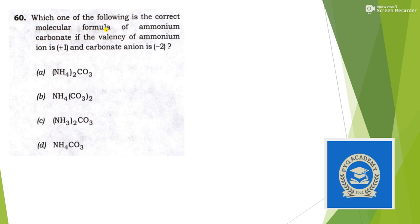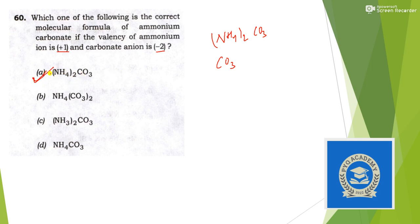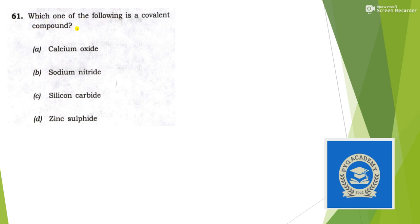Next: what is the correct molecular formula of ammonium carbonate, given the valency of ammonium ion is +1 and carbonate anion is −2? Ammonium is NH₄ and carbonate is CO₃. Cross-multiplying the valencies: (NH₄)₂CO₃. Answer is option A.